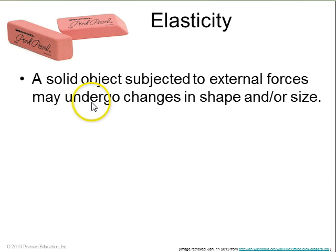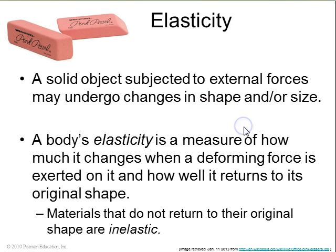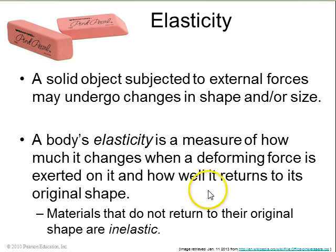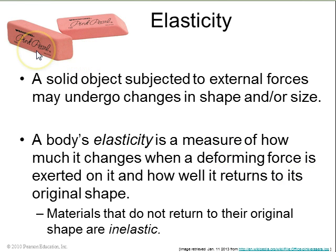Any solid object, if you subject it to external forces, might undergo changes in its shape. Elasticity is a measure of how much it changes per deforming force and how it returns to its original shape. So if you bend an eraser, it wants to return to its original shape. If a material doesn't do that — like clay — then that's called inelastic.